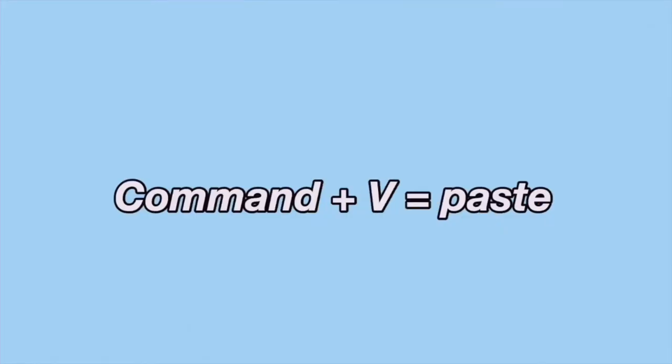Something that makes the rough edit go faster is keyboard shortcuts. Command+B cuts and splits the clip. Command+Z undoes what you just did — very helpful. Shift+Command+Z is redo. Command+C is copy, and Command+V is paste.